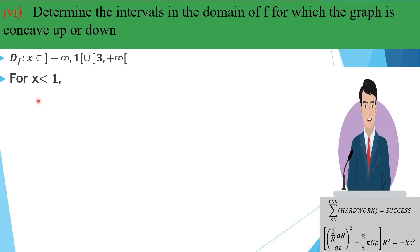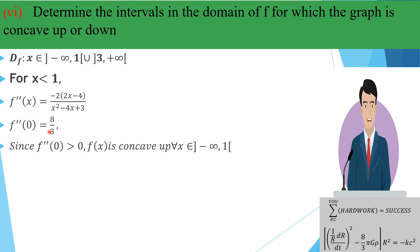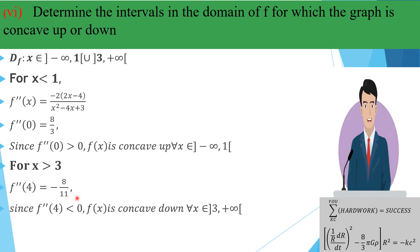For the interval x < 1, test x = 0: f''(0) = 8/3, which is positive, so the graph is concave up on (-∞, 1). For the interval x > 3, test x = 4: f''(4) = -8/11, which is negative, so the graph is concave down on (3, +∞).